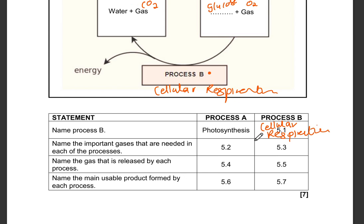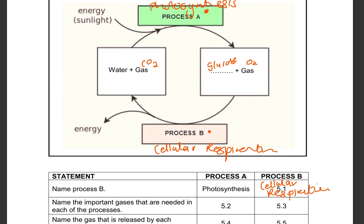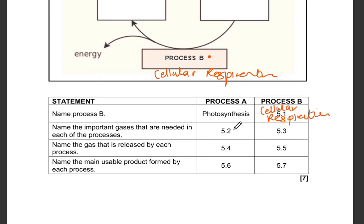Name the important gas that is needed in each of the processes for 5.2. Where was 5.2? We actually don't even need to scroll up. So the gas that is needed in photosynthesis, that will be carbon dioxide. Gas needed in cellular respiration, that is oxygen.